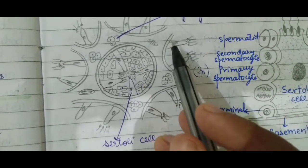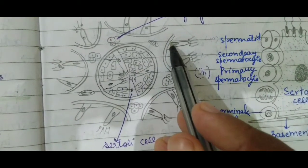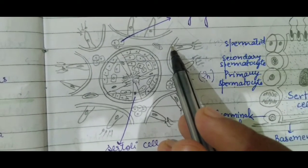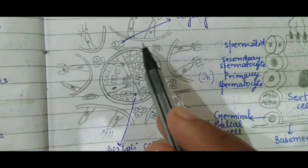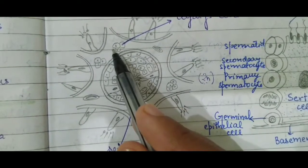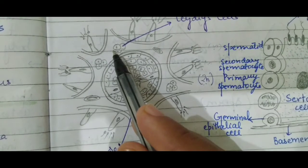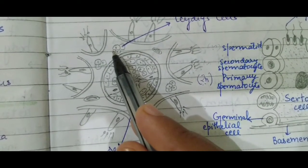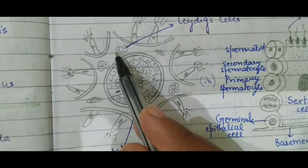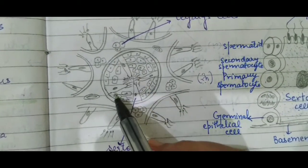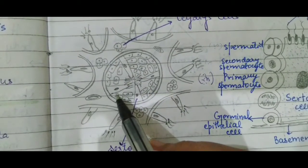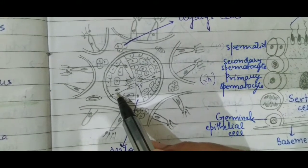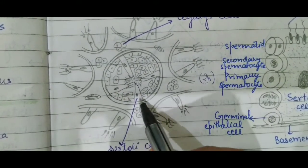The third difference is that Leydig cells secrete androgens — the male sex hormone — for example, testosterone. Sertoli cells, on the other hand, provide nourishment to the developing spermatozoa or sperm.